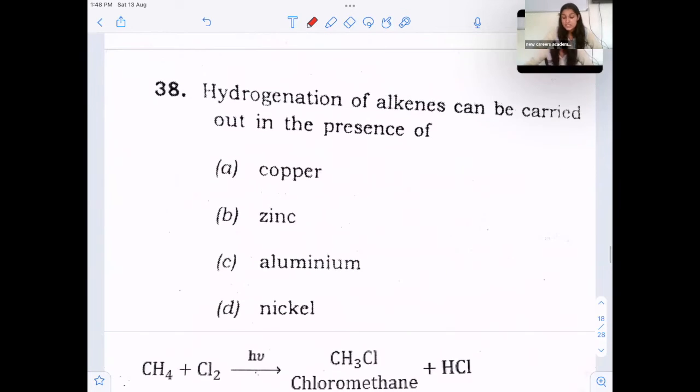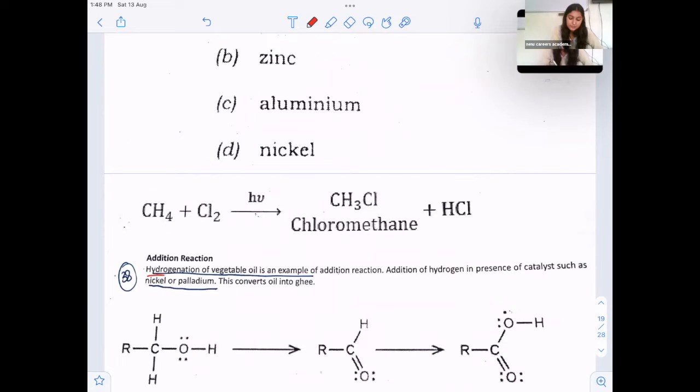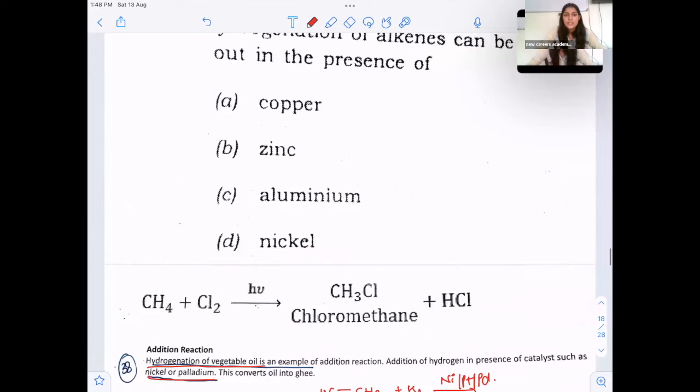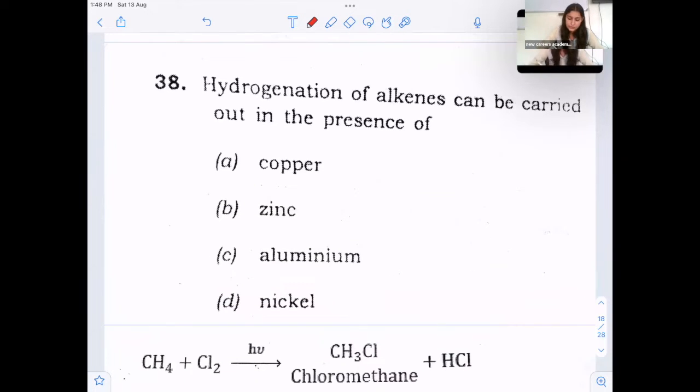Next, hydrogenation of alkenes can be carried out in presence of, this is an example of addition reaction, hydrogenation. So hydrogenation means to add hydrogen. So when we add hydrogen to ethene, sorry, alkene, ethene is example of alkene, it's done in presence of nickel, platinum or palladium. These three are the catalysts involved. So answer is option D, nickel could be platinum or palladium. Option D is correct.